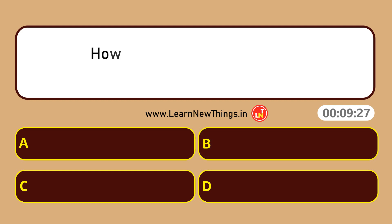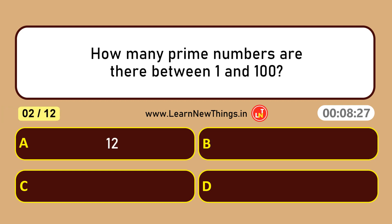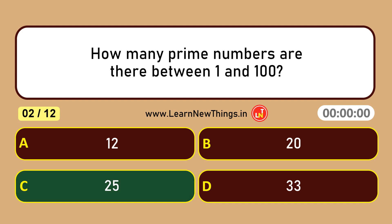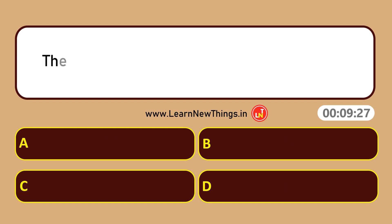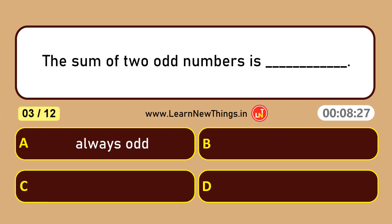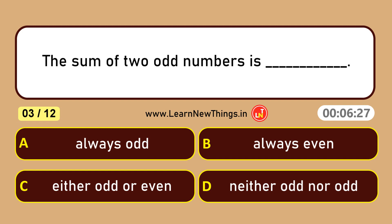How many prime numbers are there between 1 and 100? 25. The sum of two odd numbers is even.